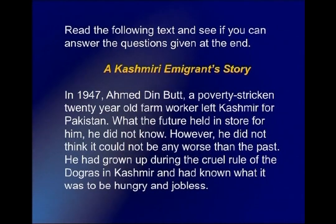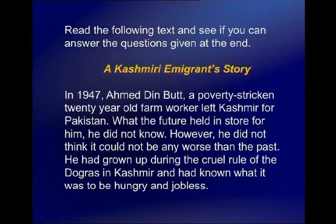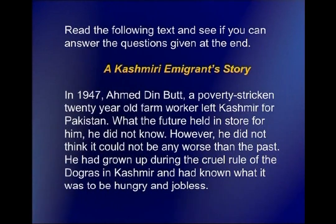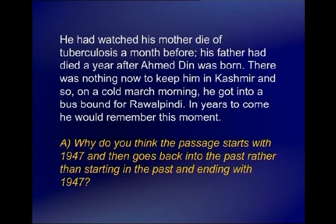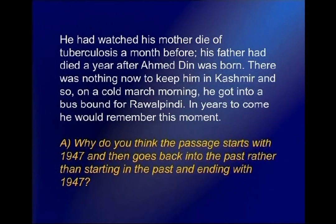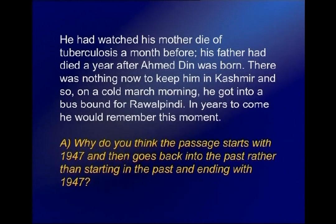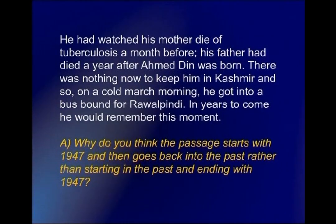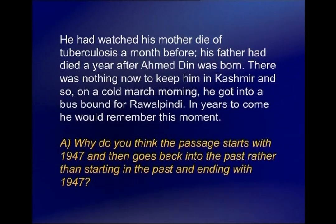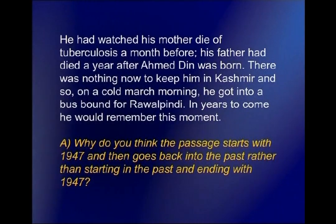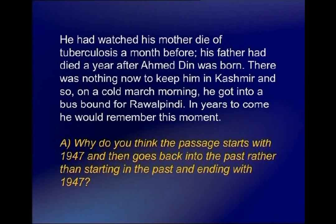The writer develops an unexpected sequence because he wants to highlight the fact that Ahmed Deen Butt was forced to leave Kashmir for Pakistan. The way his leaving is highlighted captures the reader's attention and makes the reader want to find out why he was leaving and why he was poverty-stricken. In general, writers use unexpected chronological sequences when they want to emphasize something other than time. Even if you are writing in chronological mode, the writer has the liberty to use an unexpected time sequence.